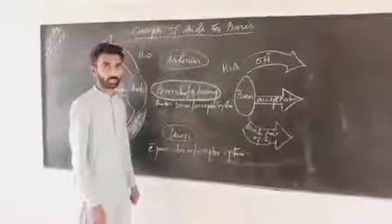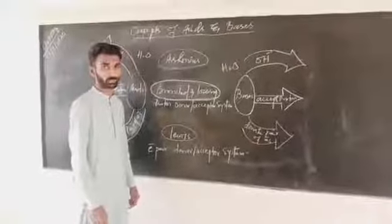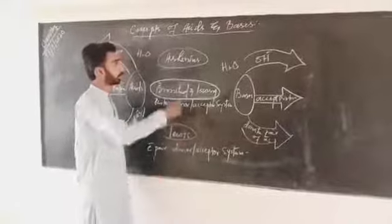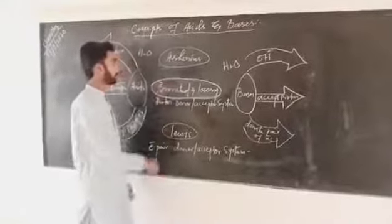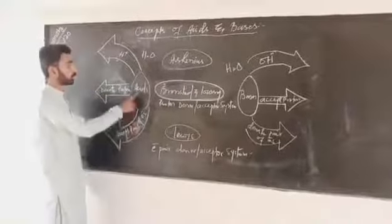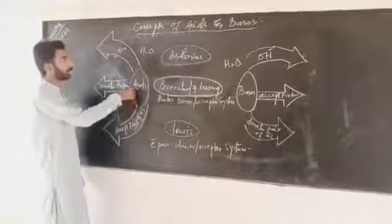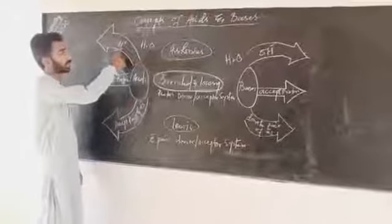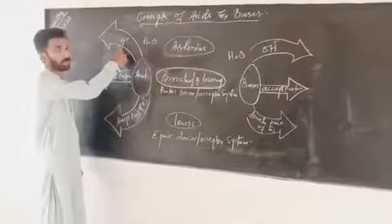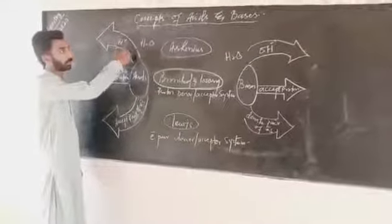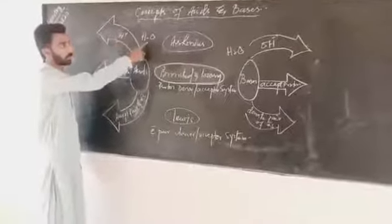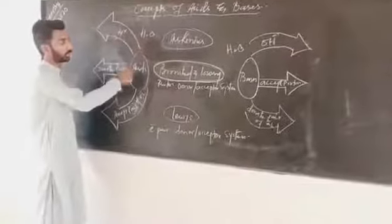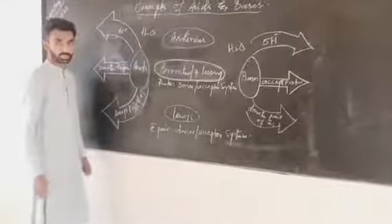According to Arrhenius, acids are those substances that give hydrogen ions — or produce hydrogen ions — in aqueous solution. These are known as acids.